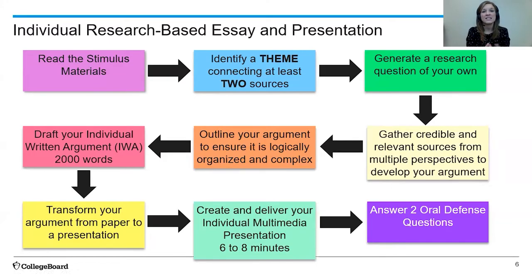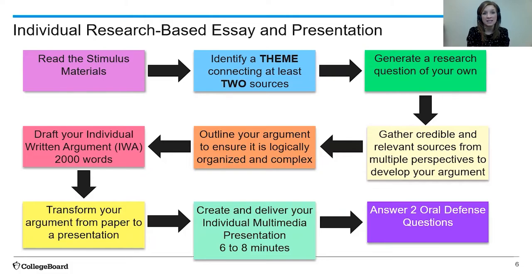Notice the keyword here: your own. This is not asking you to repeat something that's already been argued in the stimulus material, nor is it asking you, like the IRR did, to provide the arguments in the sources. This is about you using the sources to generate your own argument, and then finding outside sources as well. You'll generate this research question of your own, tied to and inspired by a theme connecting to the stimulus material. You'll then gather credible and relevant sources from multiple perspectives to develop your argument. Multiple perspectives are important — we want to show the complexity of an issue and ensure we're being fair, not just presenting one side. From your work on the IRR, we know you're experienced in finding credible and relevant sources: academic journals and highly credible sources relevant to the work you're doing.